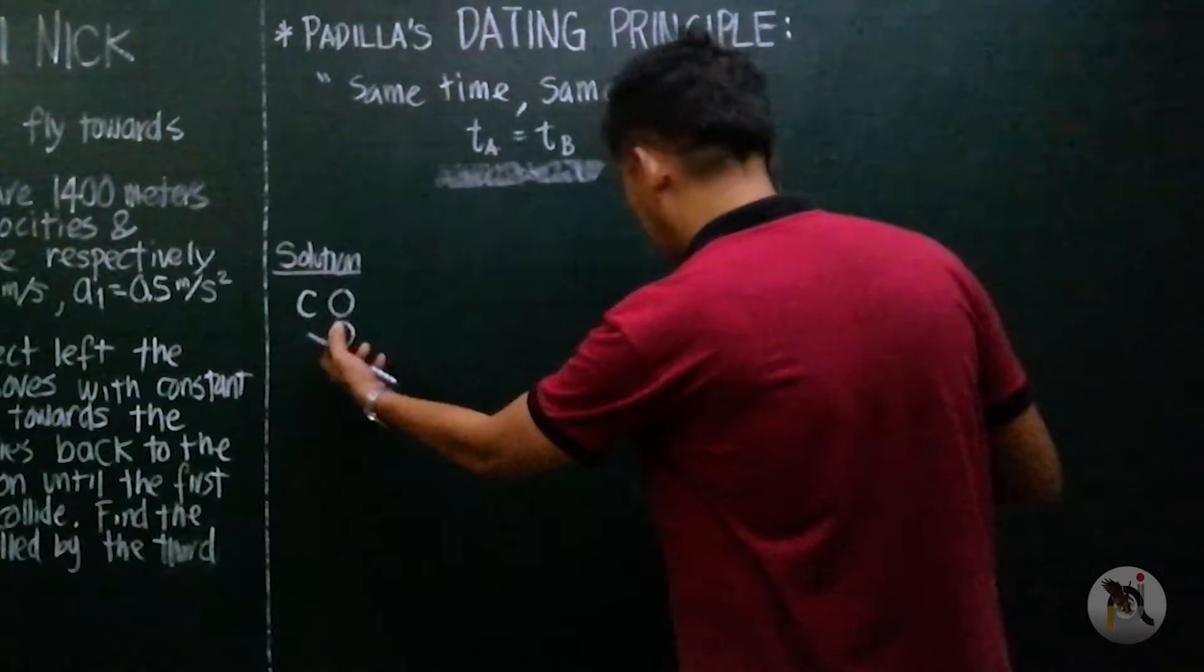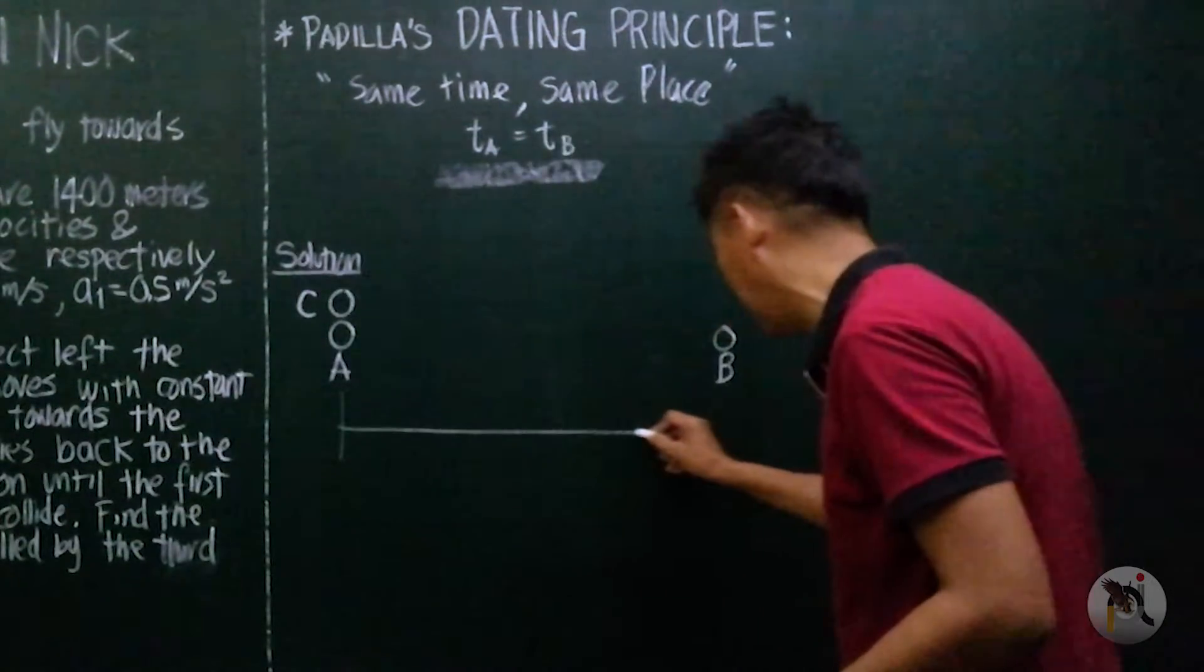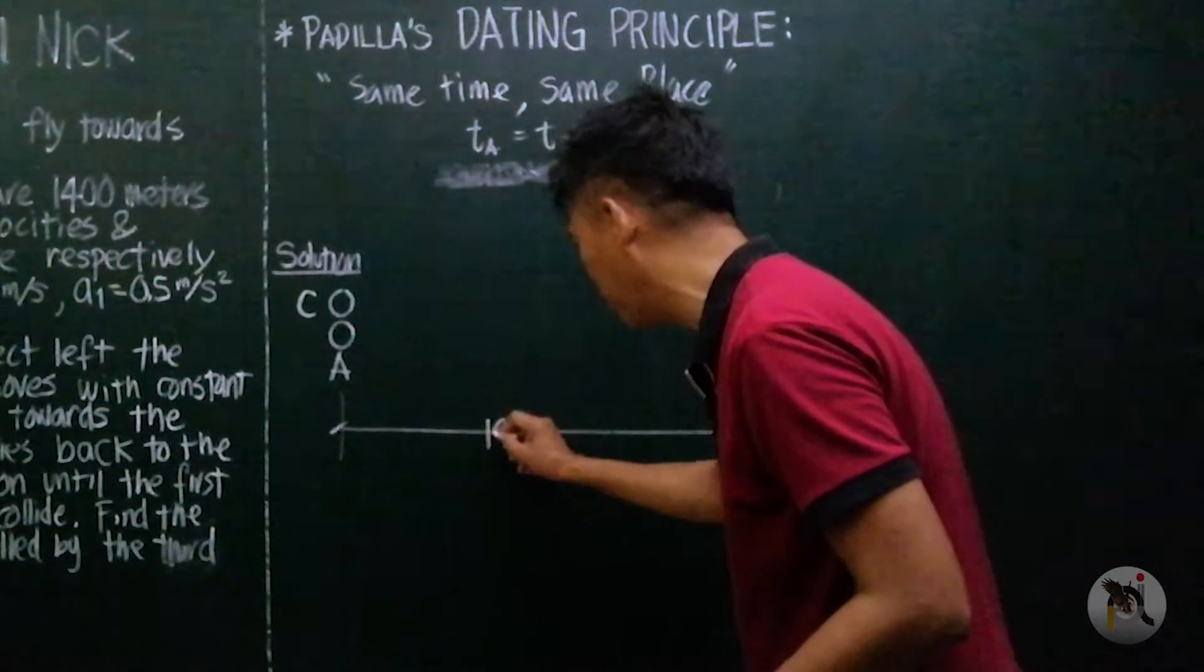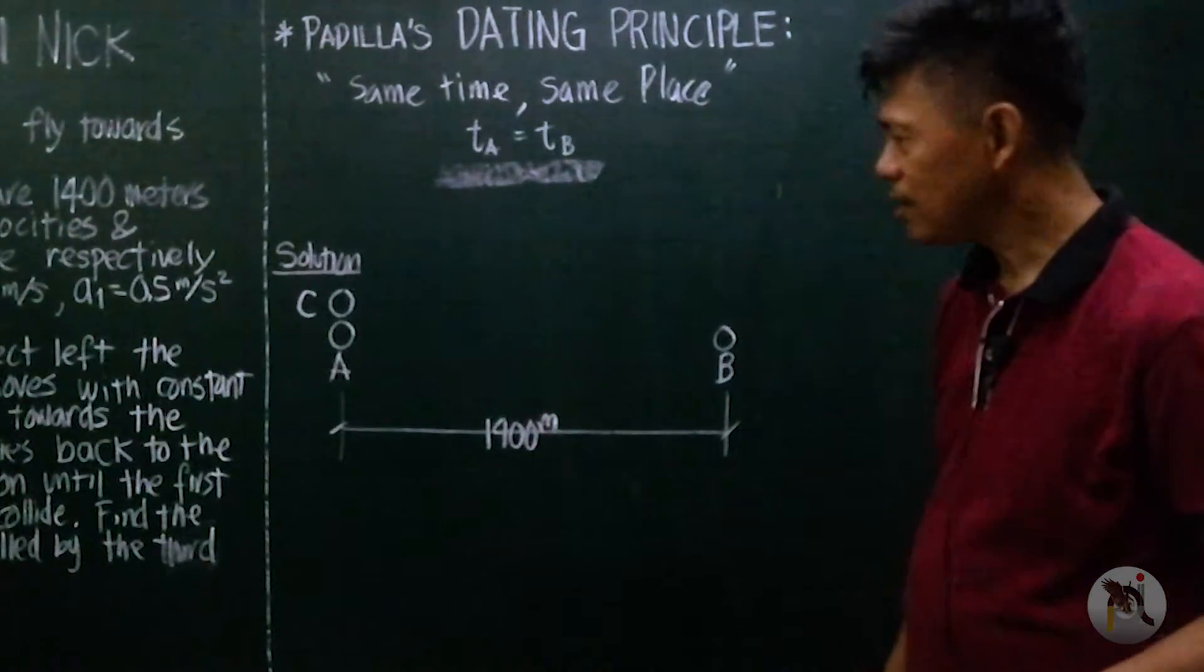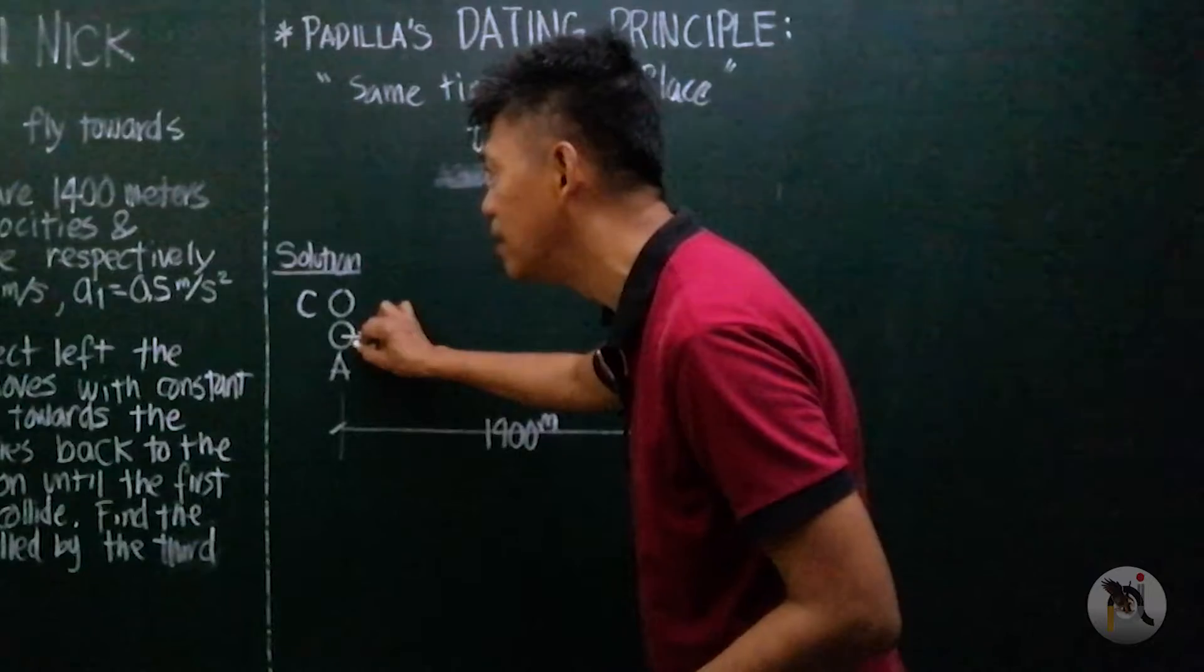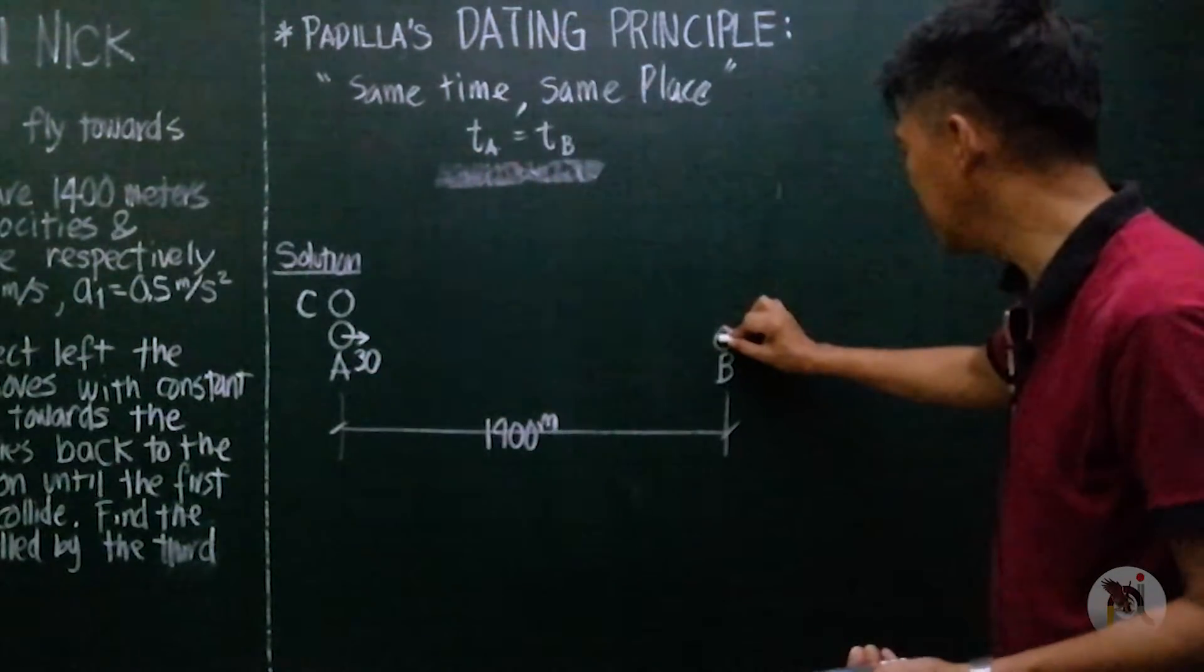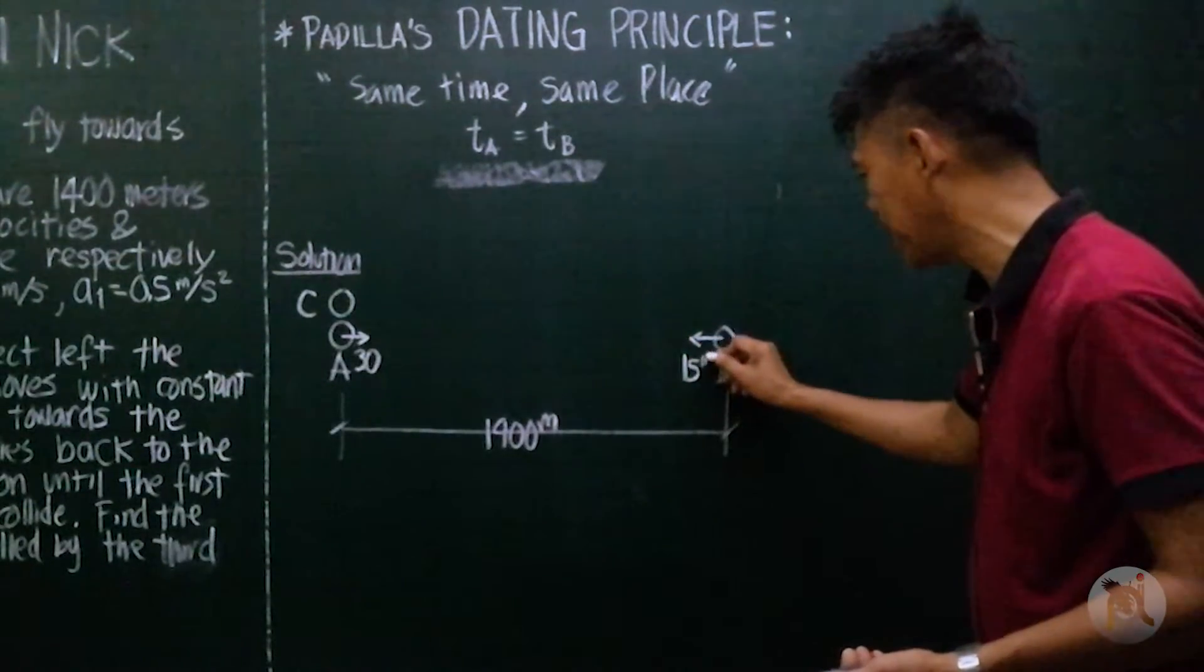Now, we have here object A and object B, called here in the problem as the first and the second object, initially 1400 meters apart. Now, this has an initial velocity of 30 meters per second. This has an initial velocity of 15 meters per second.